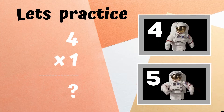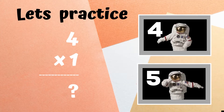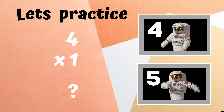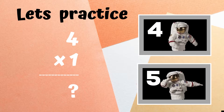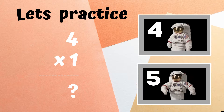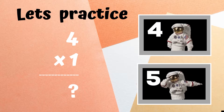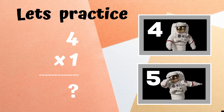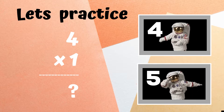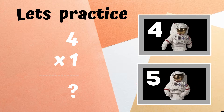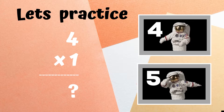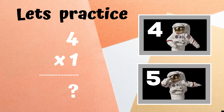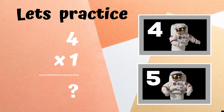Before we begin, let's practice. You'll see the problem four times one on screen. If you think the answer is four, you should be doing the floss dance like the astronaut on top. If you think the number is five, you should be dabbing like the astronaut on the bottom.